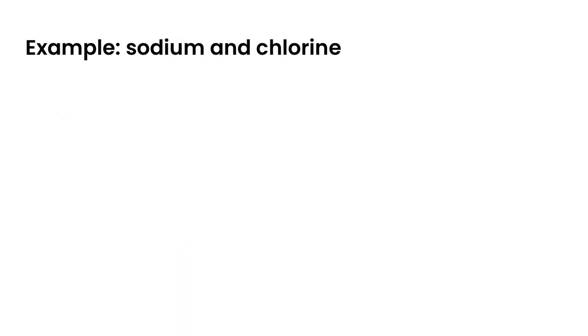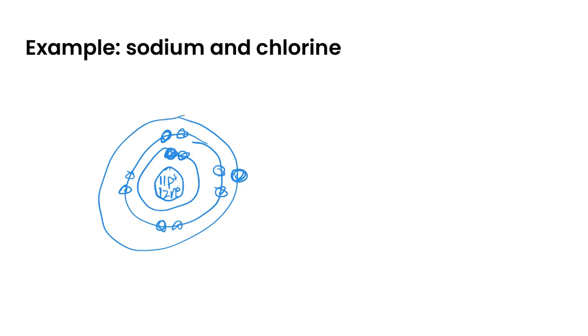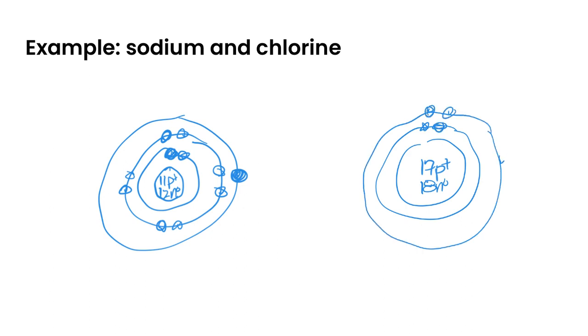So let's look at an example. If we take sodium and let's draw the Bohr-Rutherford diagram for sodium. So sodium has 11 protons, 12 neutrons, and then it's got 11 electrons so we'll do two, we'll do eight, and then because it's in group one it has one valence electron. And then chlorine, if we take chlorine for example we've got 17 protons, 18 neutrons, and then it's got two in the first shell, eight in the second shell, and then it has seven valence electrons in its valence shell.